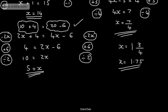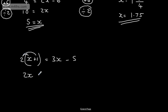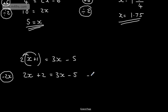Let's do one more — this time involving brackets. We're going to have 2 lots of (x plus 1) is equal to 3x minus 5. I want to solve the equation. The first thing I'm going to do is multiply the brackets out: 2 times x gives 2x, 2 times positive 1 gives plus 2, and that equals 3x minus 5. At this stage I've got 2x on this side and 3x on this side, so I'm going to take 2x from both sides.